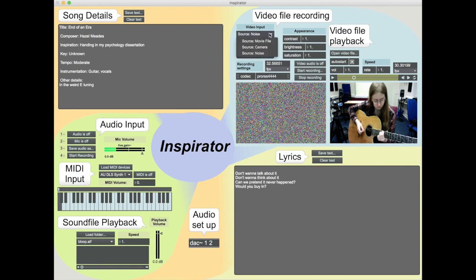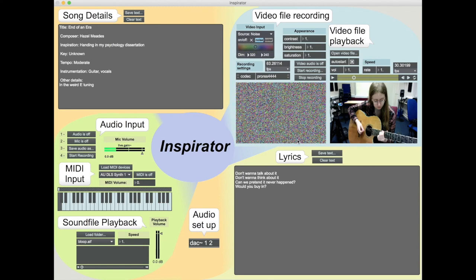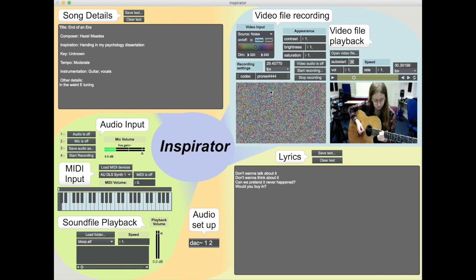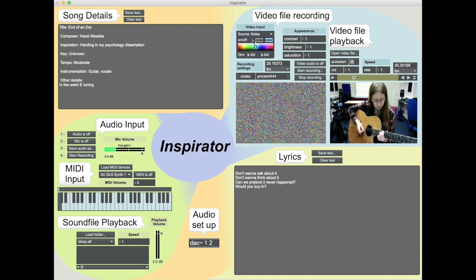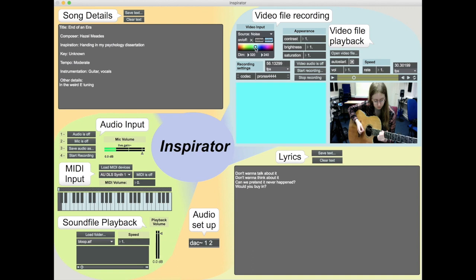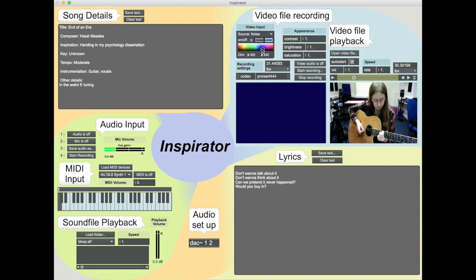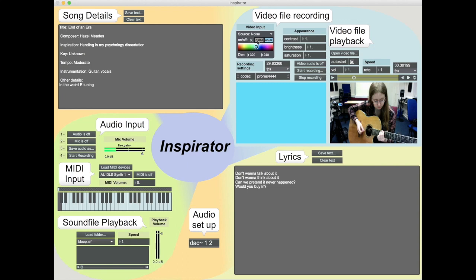In the video input you've got three different options: movie file, camera, and noise. At the moment it's on noise, so if we turn that on you can see this weird abstract thing, and if you turn it off it stops moving. There's also a colour option so you can change the colours. And you can change the dimensions as well for the video, but I'm going to leave those alone for now.